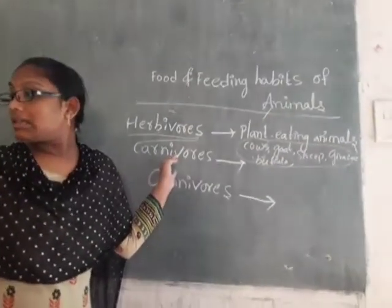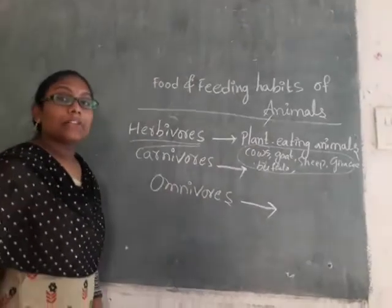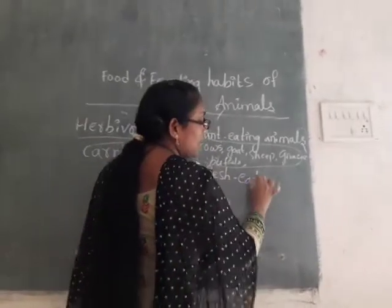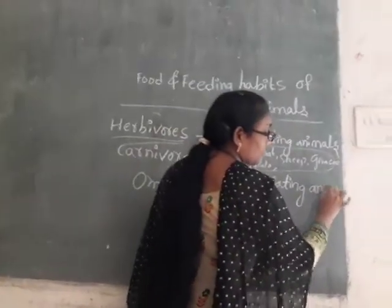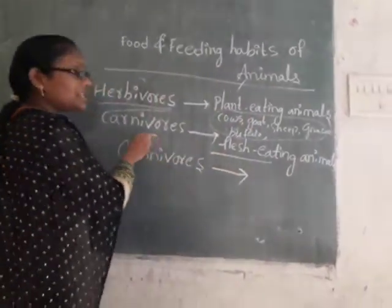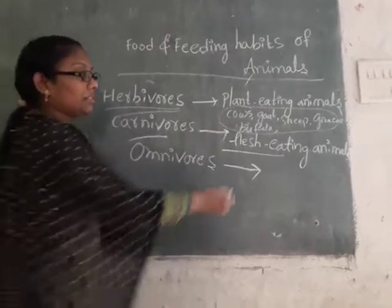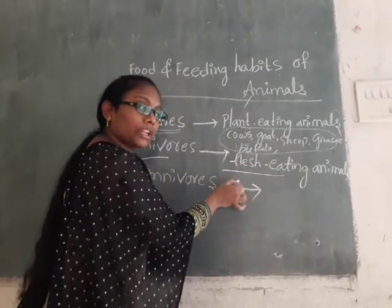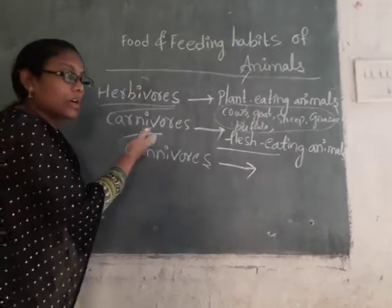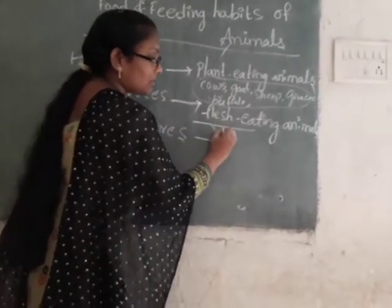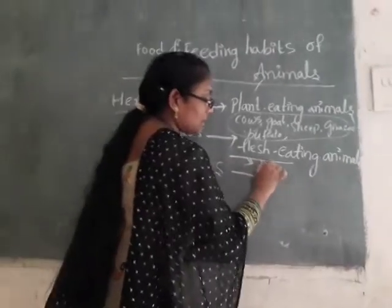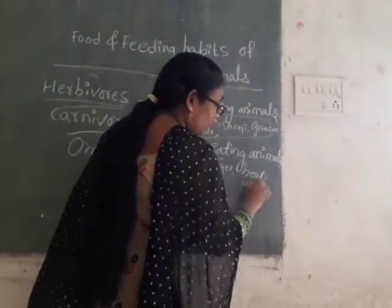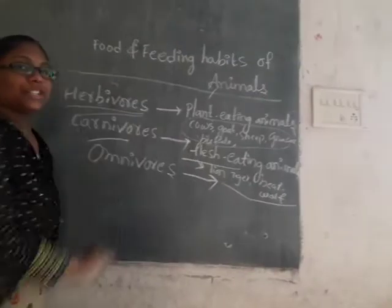Carnivores are called flesh-eating animals. Carnivores means flesh-eating animals. Flesh-eating animals are called carnivores. Which animals eat the flesh of other animals are called carnivores. Examples of carnivores: lion, tiger, bear. These are the examples of flesh-eating animals.